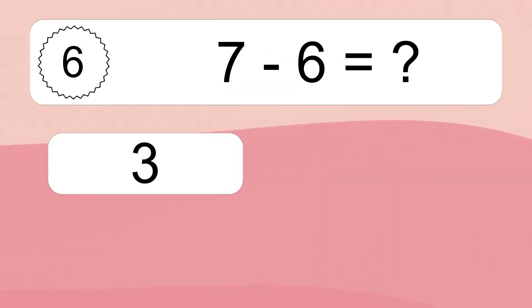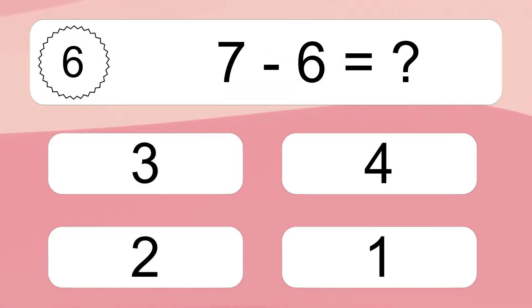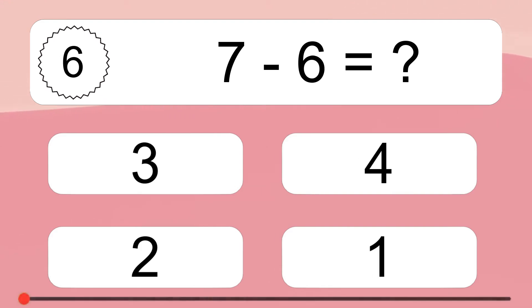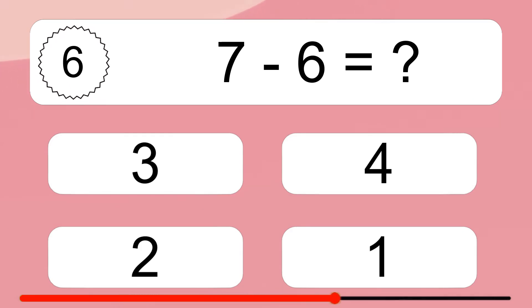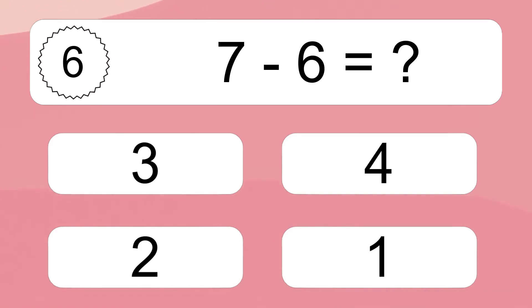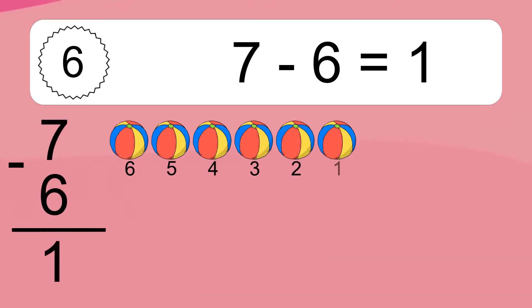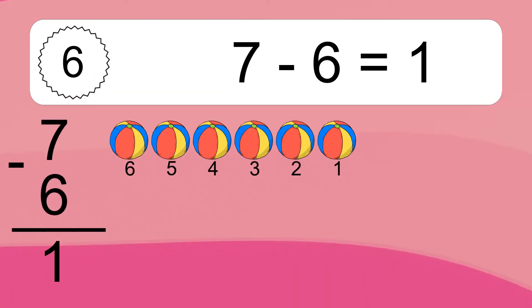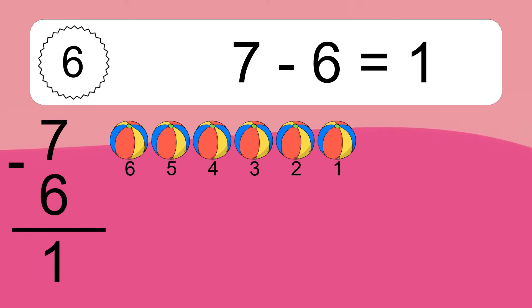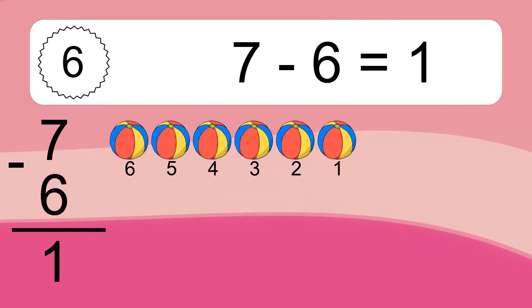7 minus 6 equals what? 7 minus 6 equals 1. Let's count it. 6, 5, 4, 3, 2, 1.